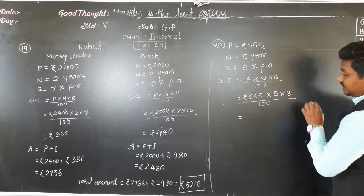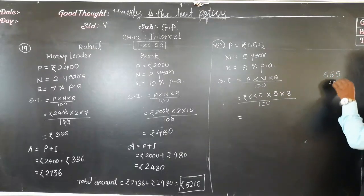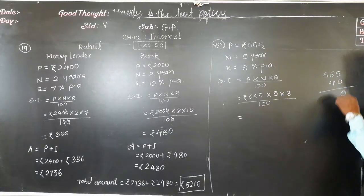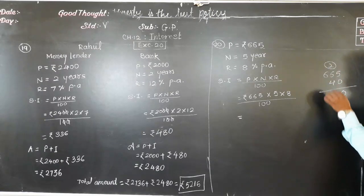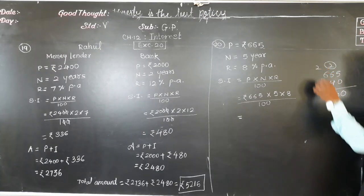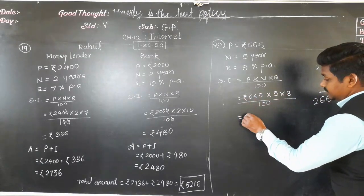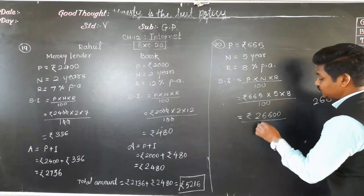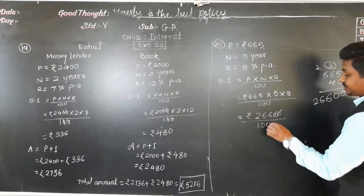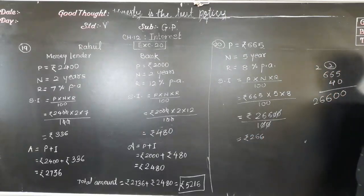First multiply: 8 fives are 40, so 665 into 40. Writing zero directly first: 4 fives are 20, 4 sixes are 24 plus 2 gives 26, and 4 sixes are 24 plus 2 gives 26 again. So we get 26,600 upon 100. Since there are two zeros at the end, we cancel them to get the simple interest: rupees 266.